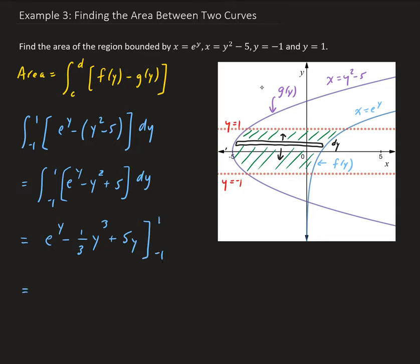So we're going to get e to the first power, which is just e minus 1 third plus 5, minus e to the negative 1. We plug in negative 1 and cube that. We're going to get minus 1 times negative 1 third, so that's going to give us a positive 1 third and then minus 5.